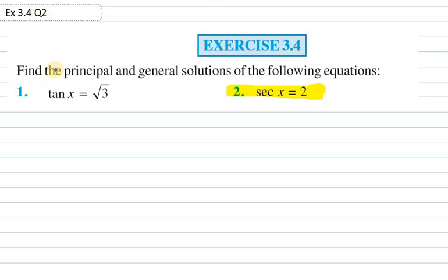Hello everyone, let's start with question number 2, exercise 3.4. In this problem, we need to find the principal and general solution of the equation sec x equals 2. The principal solution can be obtained here, but general solution can't be obtained directly because we don't have a general solution formula for sec x.